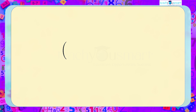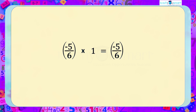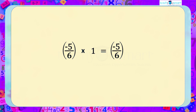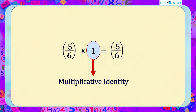If we multiply -5/6 by 1, that is -5/6 multiplied by 1 equals -5/6. Here also we get the same number itself. So we call 1 as the multiplicative identity for the given numbers.